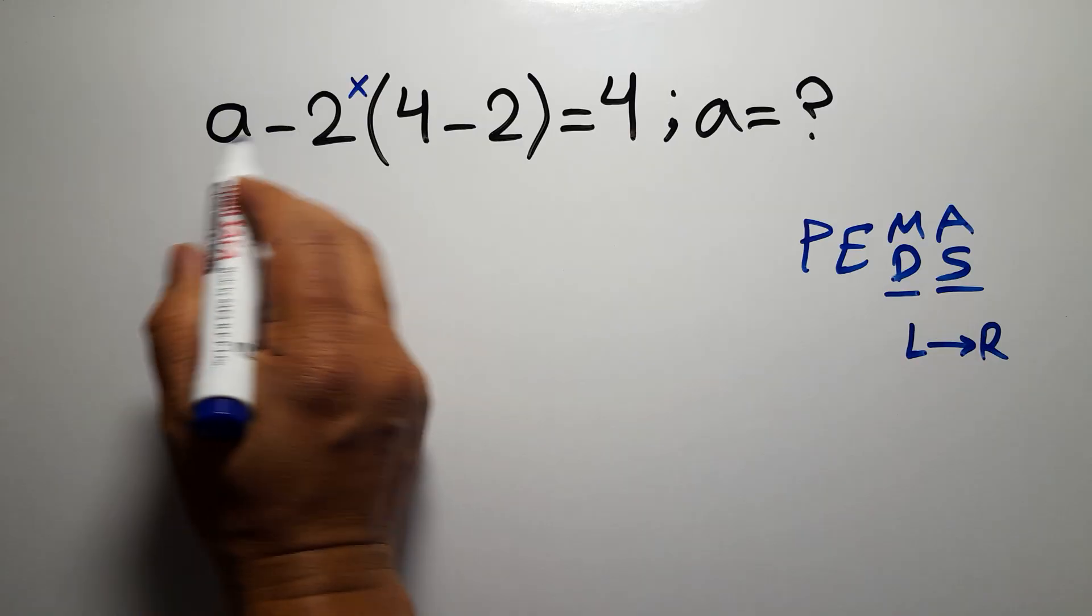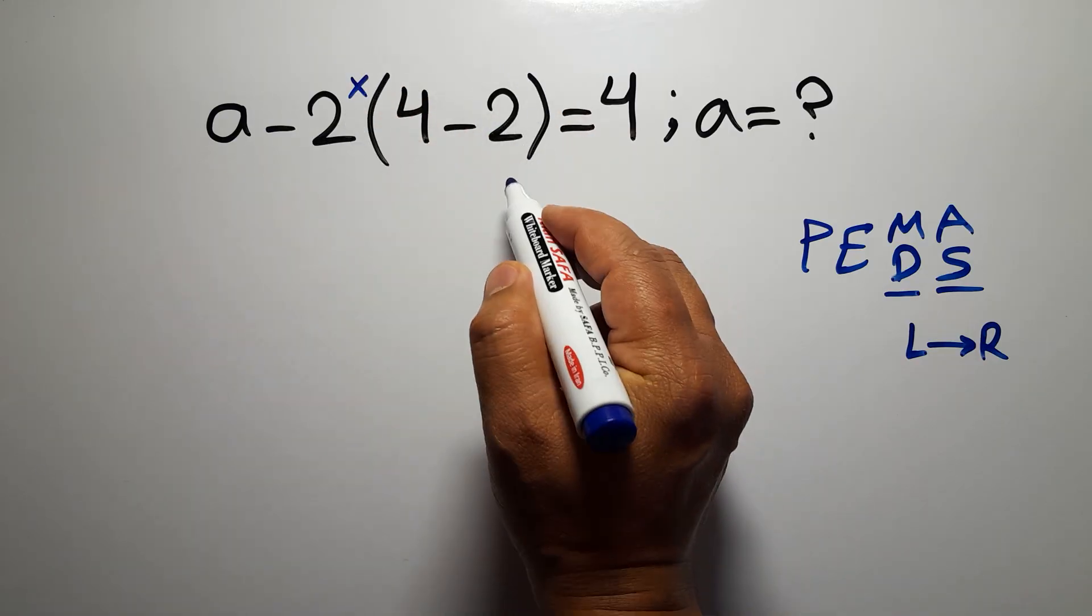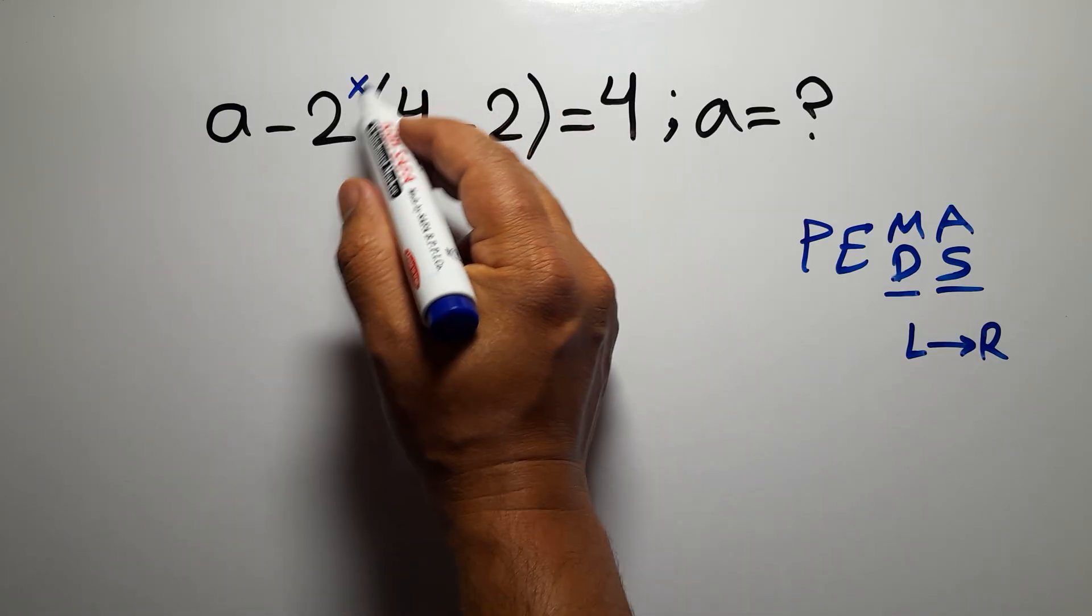So here, on the left hand side, first we have to do this parentheses. And after this parentheses, we have to do this multiplication, and finally this subtraction.